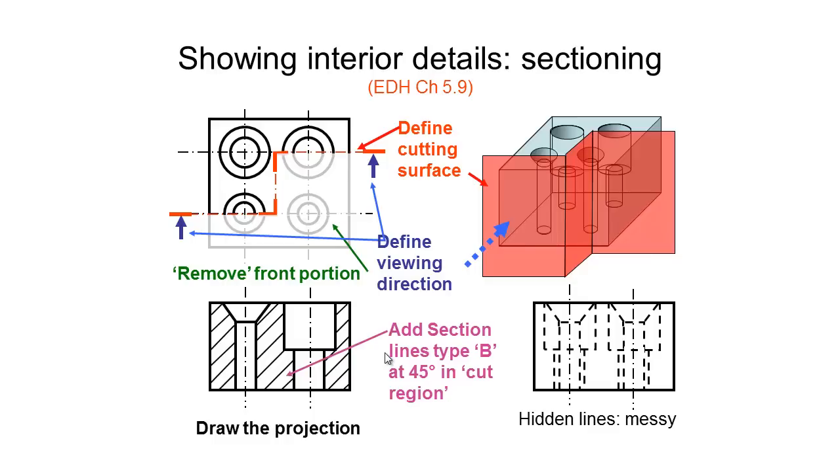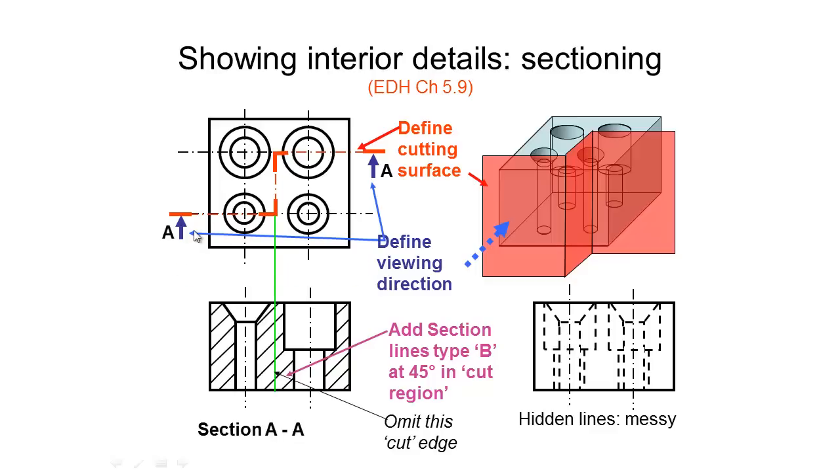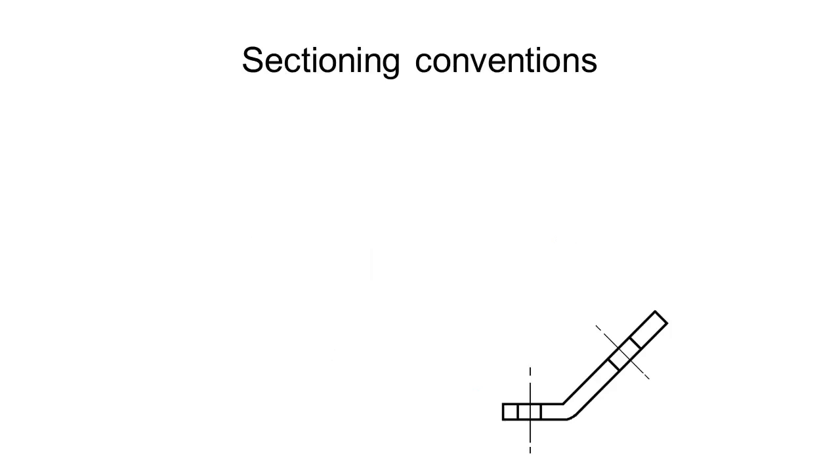To show that it is a section we add what are called sectioning lines and these are the thin type B lines drawn at a 45 degree angle in the cut region. We can also label our section cut so we've put an A here and an A here. When we've drawn the projection we can label it section AA.